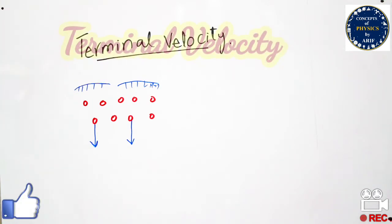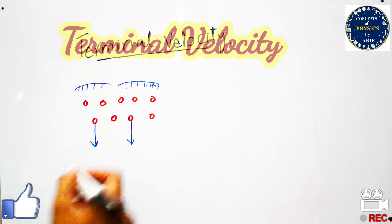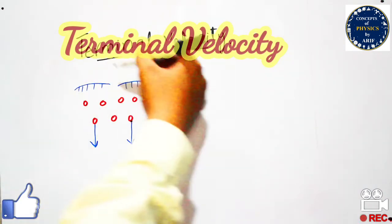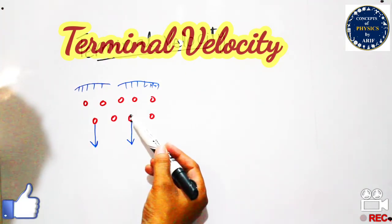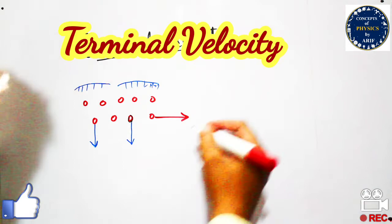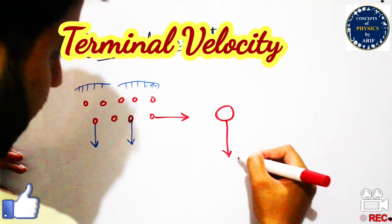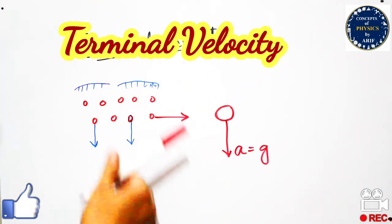Terminal velocity is a topic of fluid dynamics. We will consider that when rainfall or snowfall is moving downward due to gravity, all the particles are moving downward and an external force or drag force will pull that particle in the upward direction. If one particle is moving downward due to acceleration due to gravity, we will see it is moving downward having some velocity.